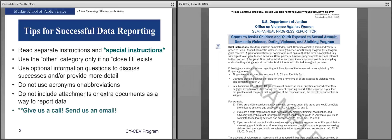Another tip: use optional information questions to discuss successes or provide more detail. Following most sections of the form, you'll find optional narrative questions. You can use these to talk about the unique successes of your grant-funded activities or further explain the data in that section. Oftentimes the hard data does not capture the full story on its own, so we encourage you to use the optional narrative questions to help us and your program specialists most accurately understand the work you're doing with grant funds.